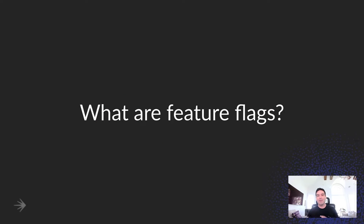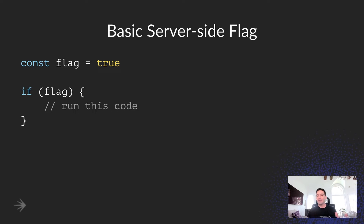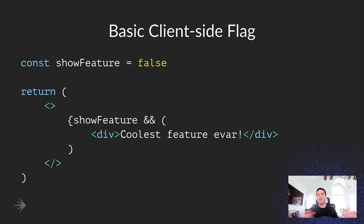I want to talk about feature flags. Many of you may have already heard of feature flags, but there could be a bunch of you who have not actually used feature flags within an application. Basically, this is a simple server-side flag. A feature flag wraps a piece of code and decides if that code runs or doesn't run. If the flag is true, the code will run. If the flag is false, the code won't run. You could also do something client-side where if the flag is true, the feature will show. If the flag is false, the feature won't show.